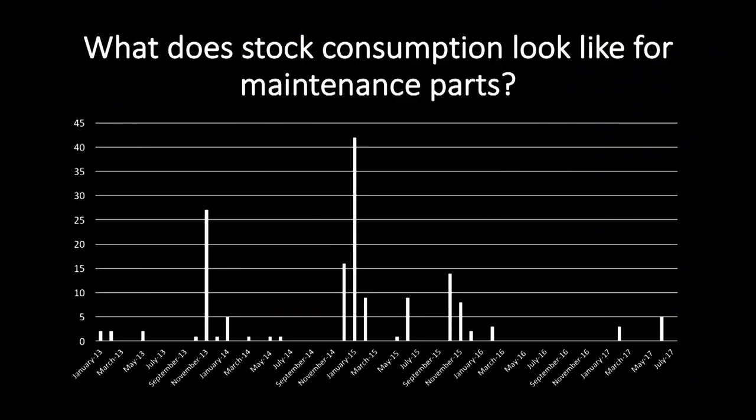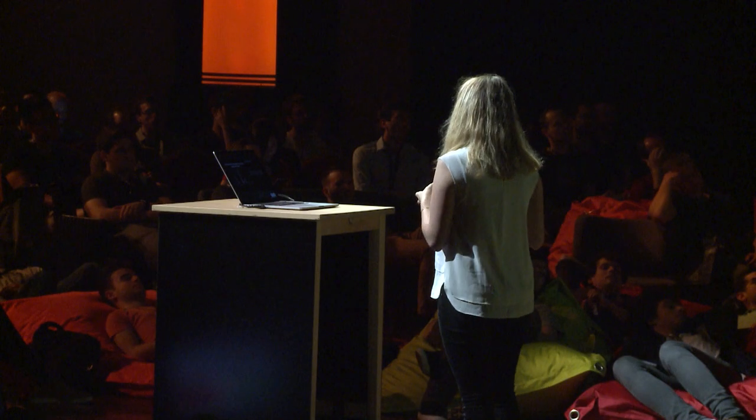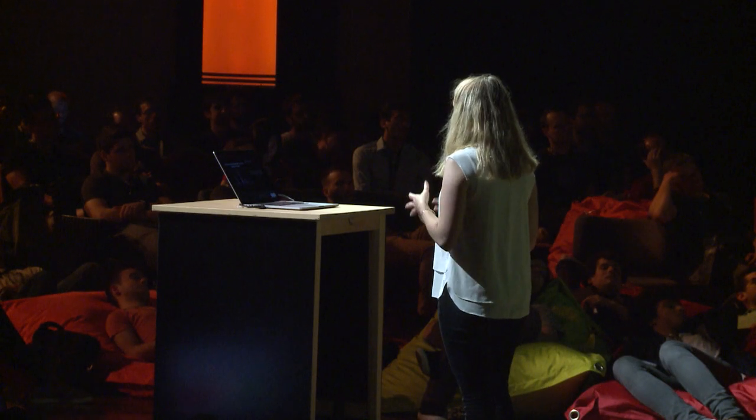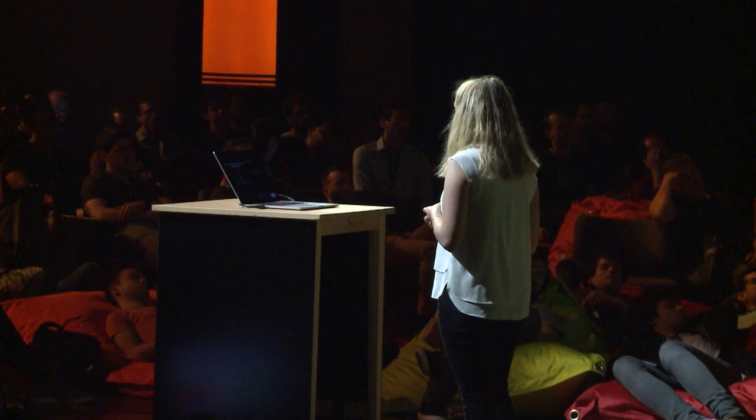The first question we asked was: what does stock consumption look like for maintenance parts for this company? As you can see, maintenance parts have a very sporadic consumption type, which means that parts are consumed at very long and irregular intervals. As you may know, this is very hard to predict.